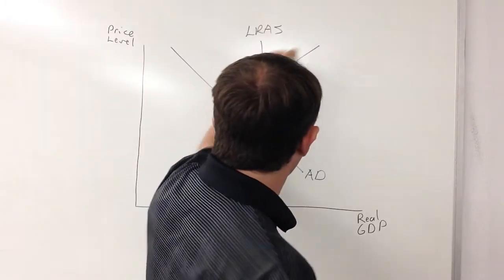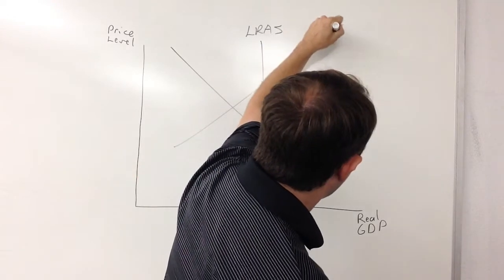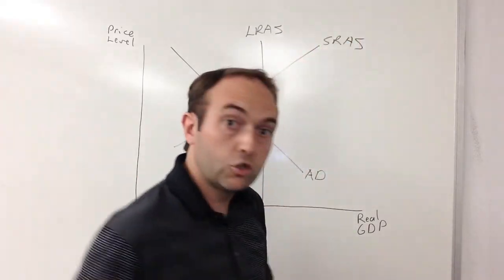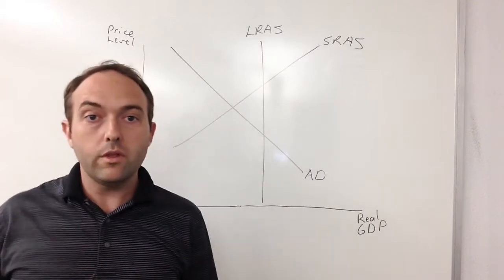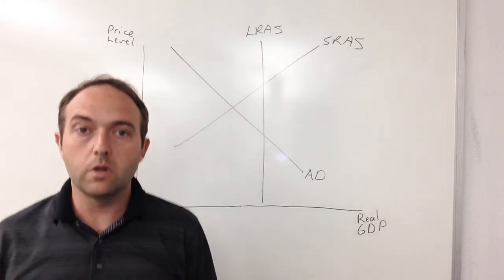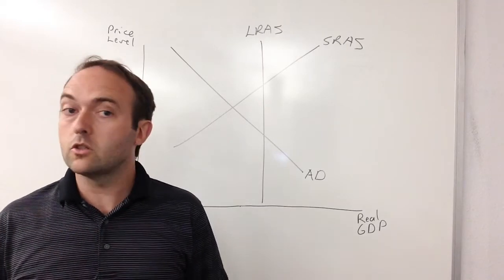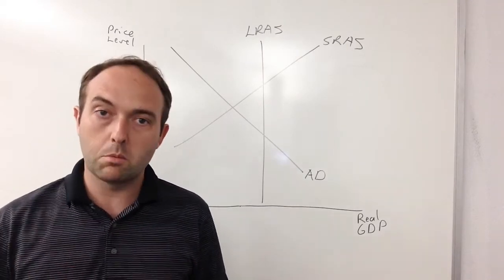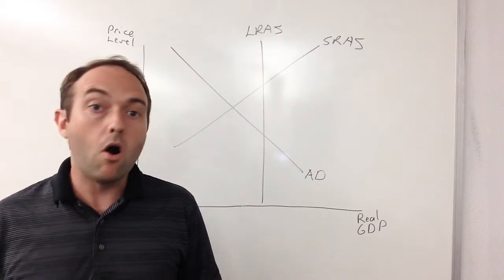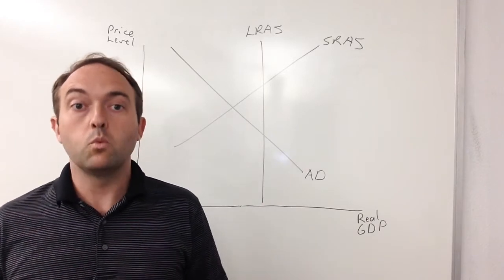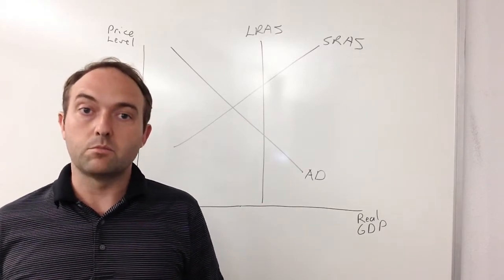Last thing we're going to put is short-run aggregate supply. Now, what this number represents is how much stuff we would produce as a nation from all of our producers, not just how much we produce on one particular type of product, but how much of all the products we produce in the nation we'd be willing to make and sell at different price levels.